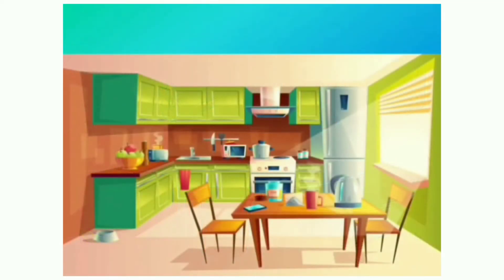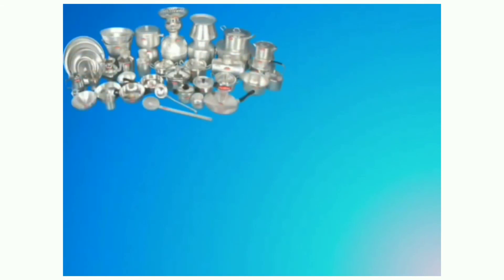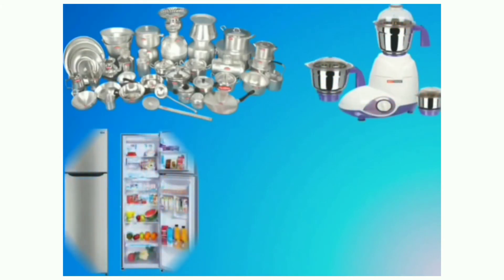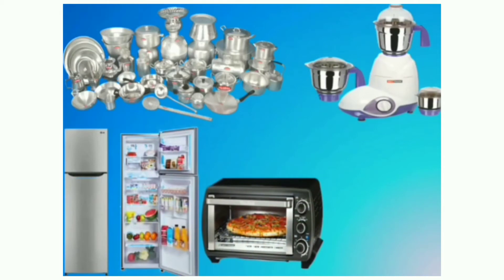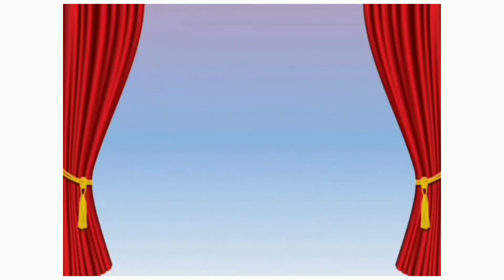And children, this is everyone's favorite place because mama prepares food here — it is the kitchen. We see utensils like plates, bowls, pans, spoons, forks, ladles, and other things like a mixer, refrigerator, oven, gas cylinder, and stove top in a kitchen. And these are a few common things we find in our home.